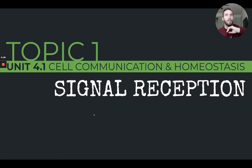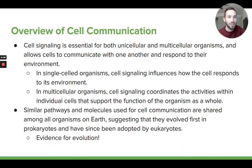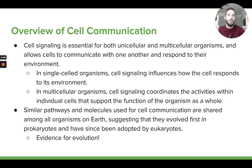In topic 1 we're going to look at how a cell receives a signal. Starting with there's a signaling molecule of some sort, and this is going to have an effect on a specific cell. So how does that cell receive that signal and know what to do after that? Let's go over an overview of what cell communication is and why it's important. We're talking about how cells can signal each other and respond to signaling molecules they find in their environment.